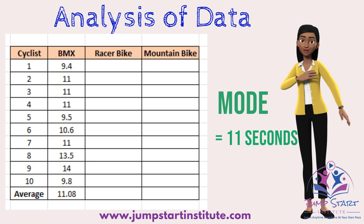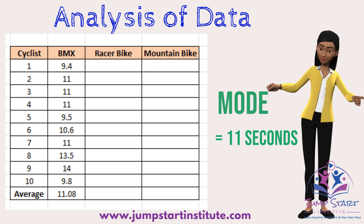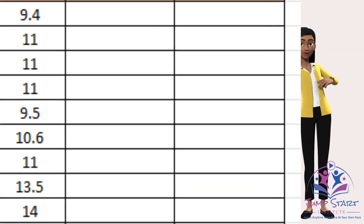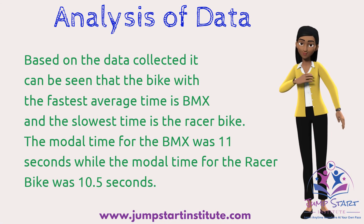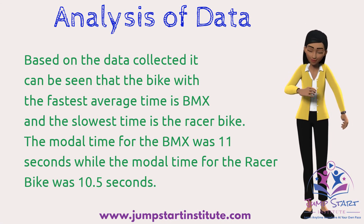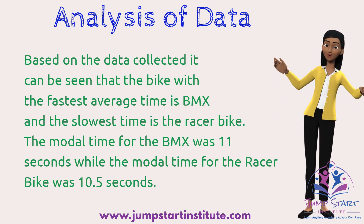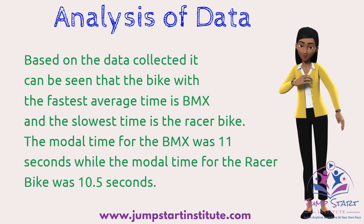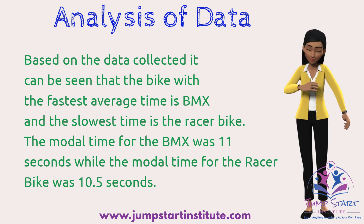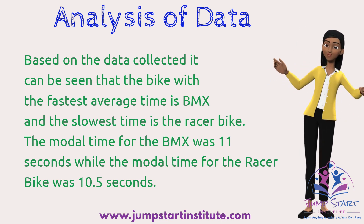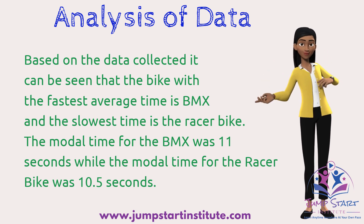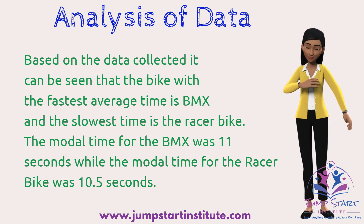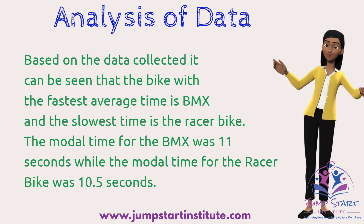After each calculation, you do a little write-up or written analysis of what you're calculating. For example, you can say: based on the data collected, it can be seen that the bike with the fastest average time is BMX and the bike with the slowest time is the racer bike. The mode time for BMX was 11 seconds, while the mode time for the racer bike was 10.5 seconds, and so on.